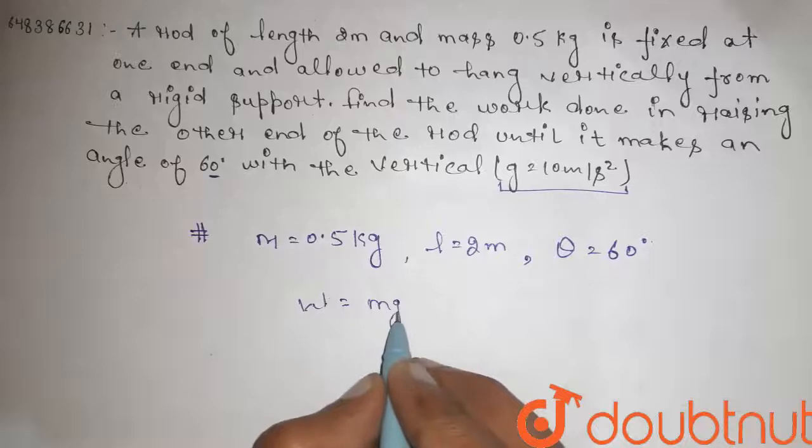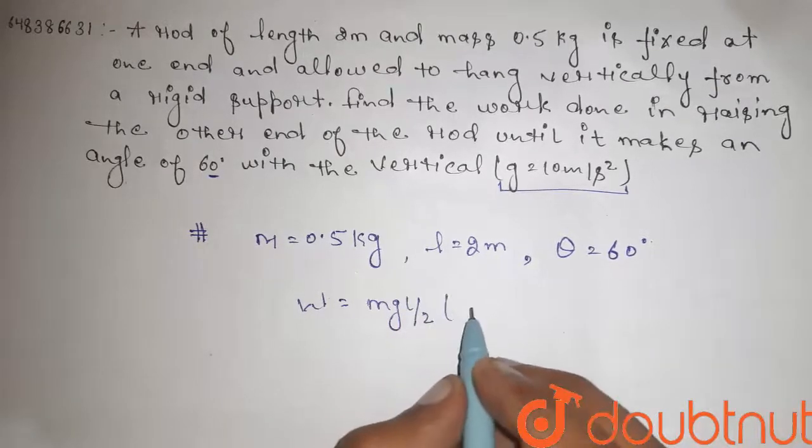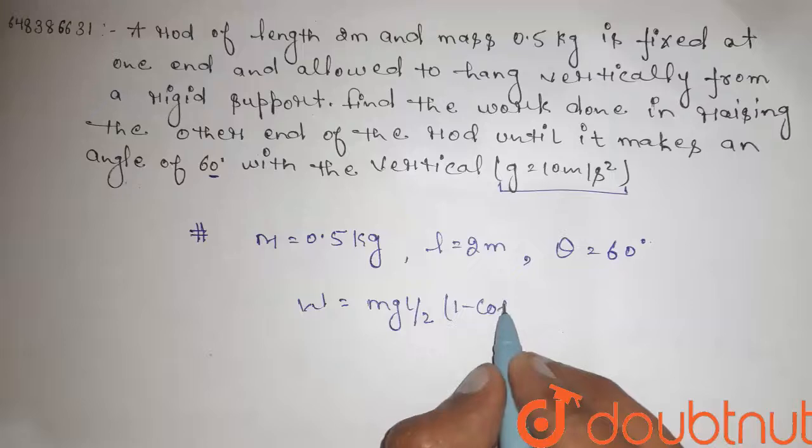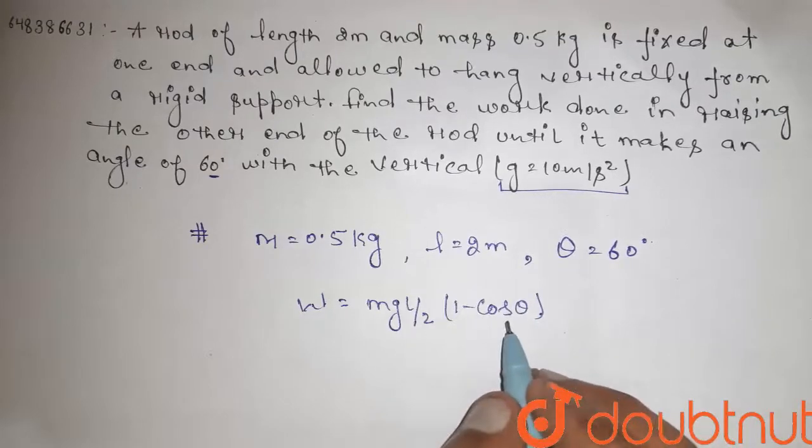W equals m g L by 2 times 1 minus cosine of theta. Okay. L by 2 times 1 minus cos theta is the displacement.